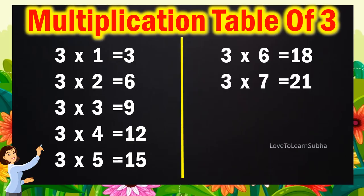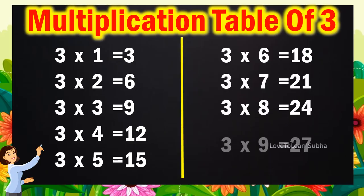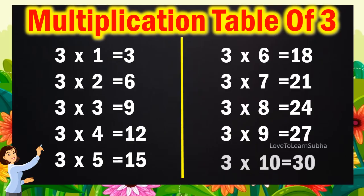3 7s are 21, 3 8s are 24, 3 9s are 27, 3 10s are 30.